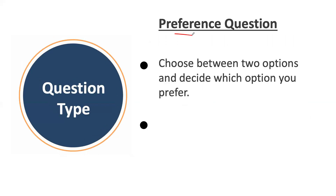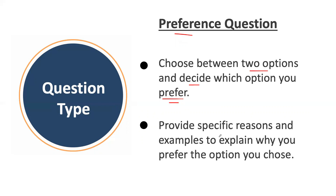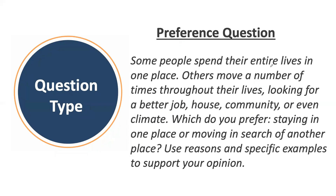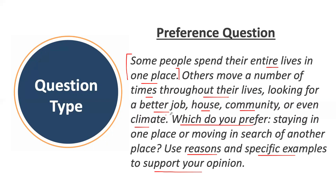Next up, we have the preference question. Here you need to choose between two options and decide which you prefer, providing specific reasons and examples to explain your choice. For example: 'Some people spend their entire lives in one place. Others move a number of times throughout their lives looking for a better job, house, community, or even climate. Which do you prefer — staying in one place or moving in search of another place? Use reasons and specific examples to support your opinion.' The two options are spelled out clearly, so you just pick the one easiest for you to argue.